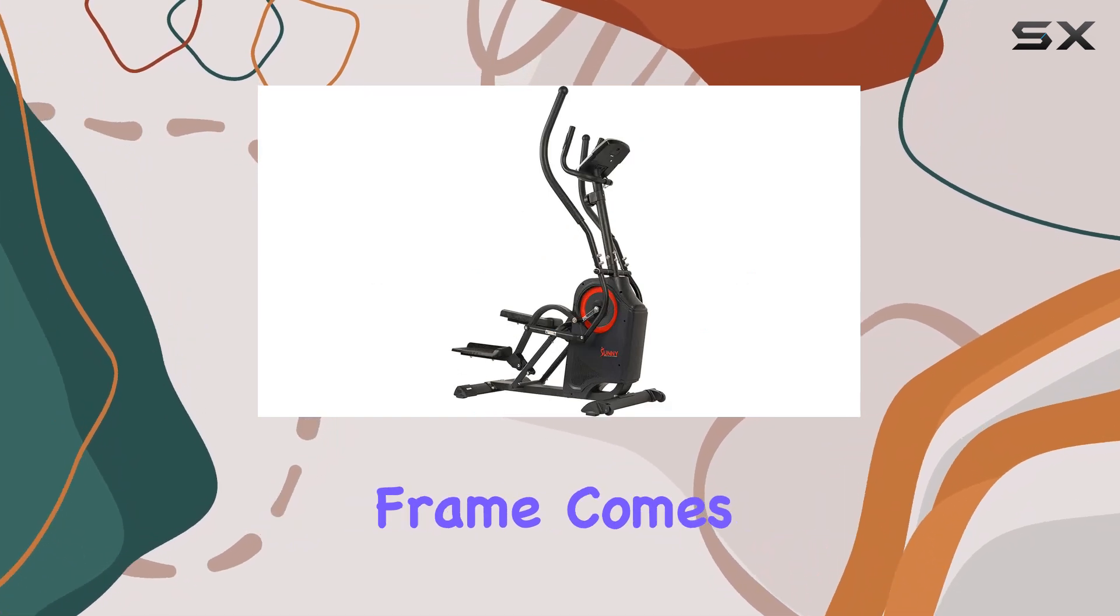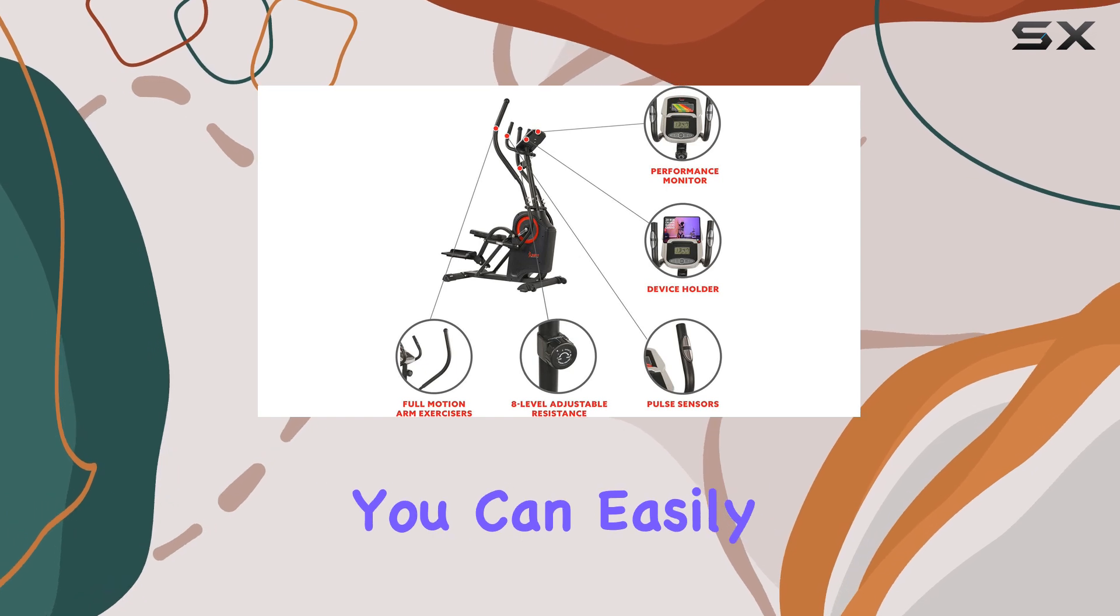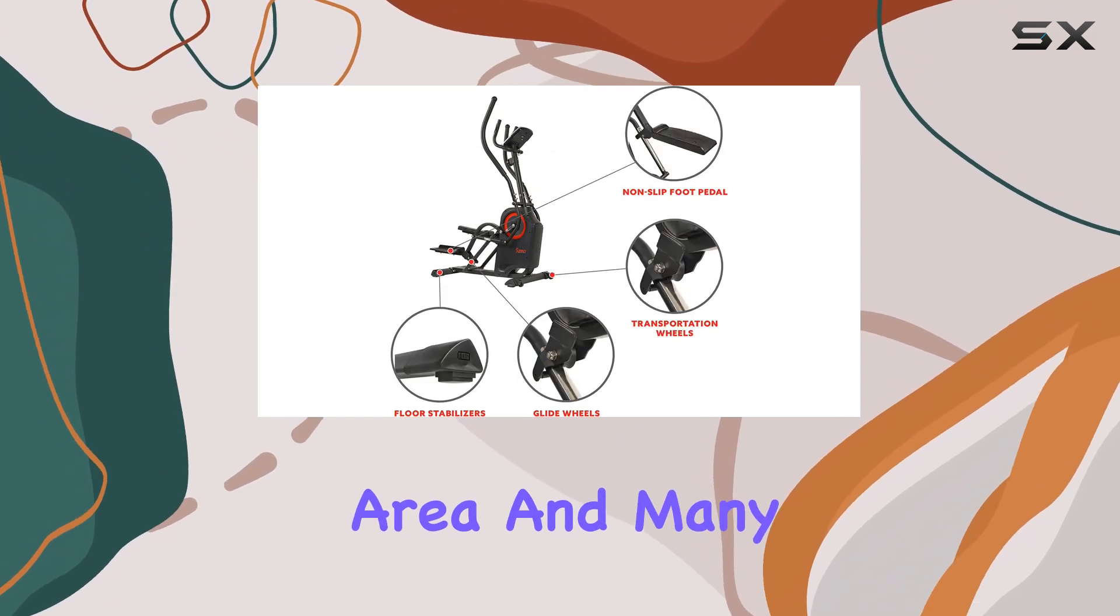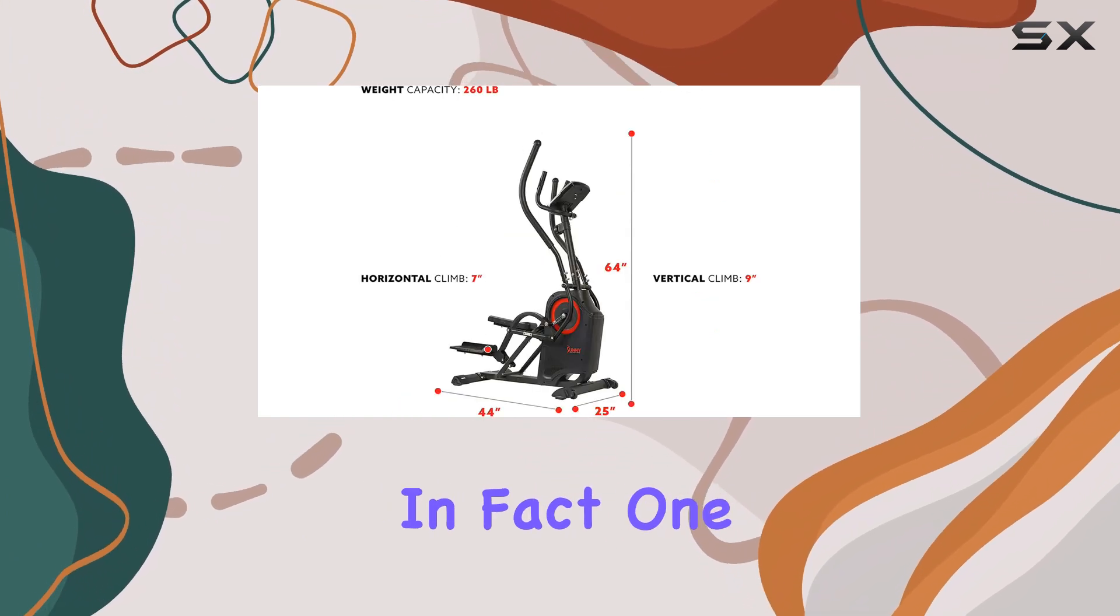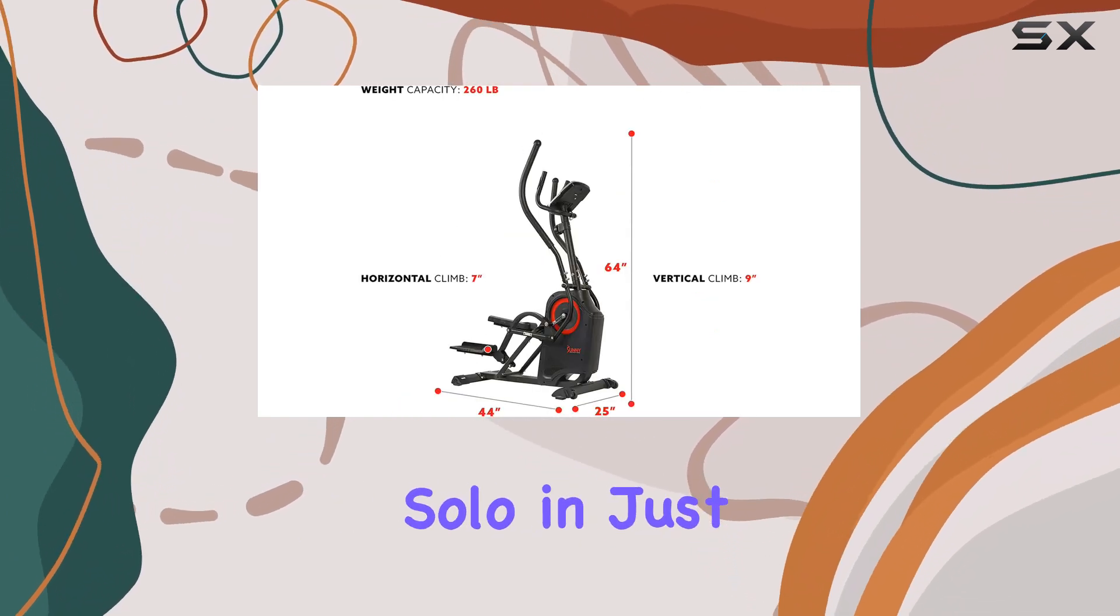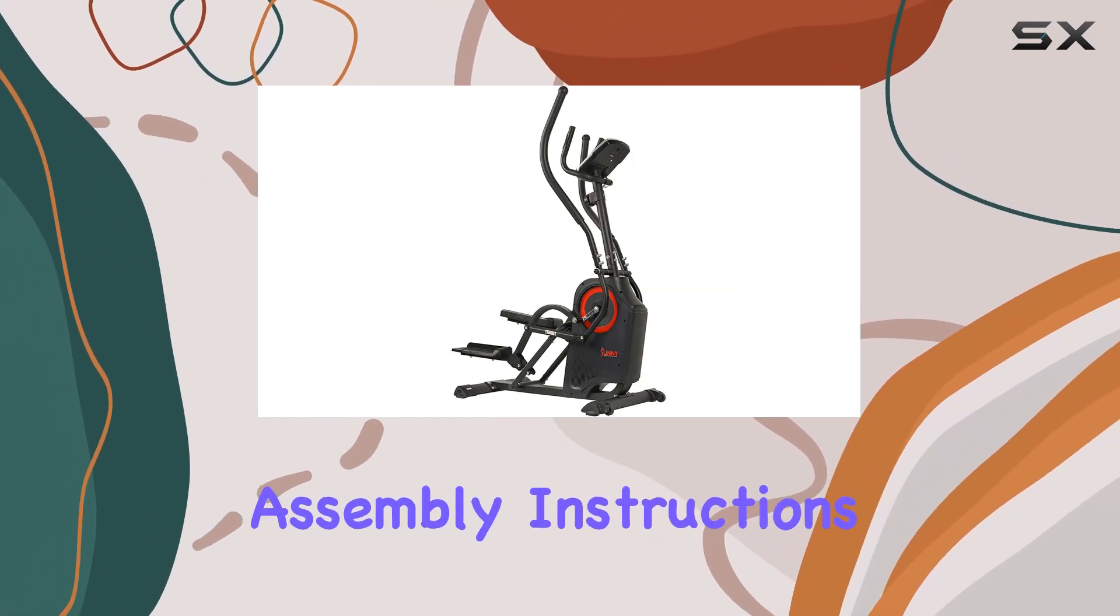The 95-pound frame comes with a wheeled front base, making it highly portable. You can easily maneuver it in and out of your workout area, and many users have praised how simple it is to assemble. In fact, one user mentioned setting it up solo in just one afternoon, which is a huge plus for those who dread complicated assembly instructions.